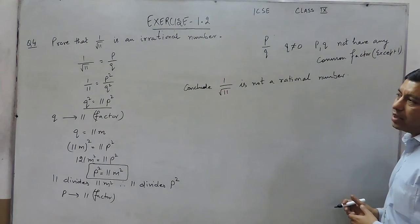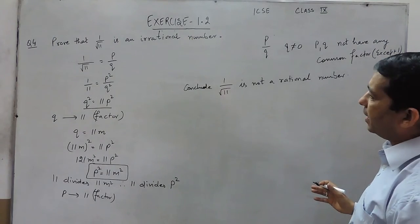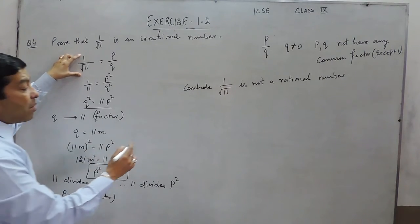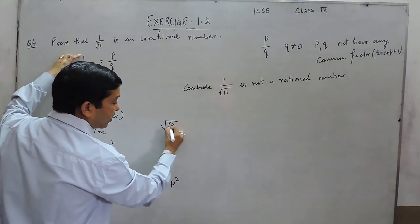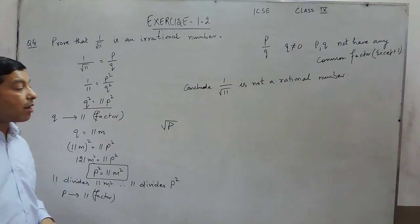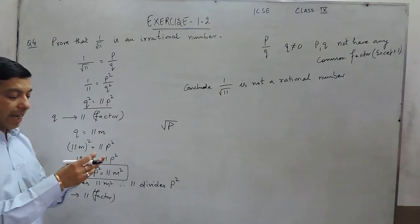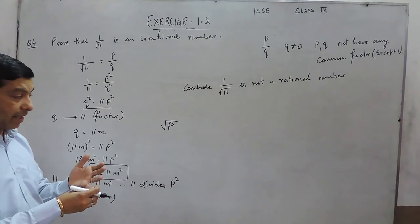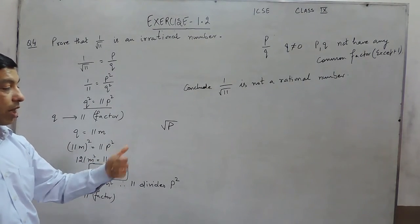We have to actually keep one thing in mind that whether it comes into under root of any imperfect square, under root P, where P is not a perfect square, it can be 2, 3, 5, 6, 7, 8, where the value of P is not a perfect square.